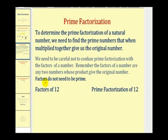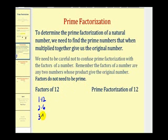Factors do not need to be prime. For example, the factors of twelve would be one and twelve, two and six, and three and four. But to determine the prime factorization of twelve, we need to figure out what prime numbers give us a product of twelve.